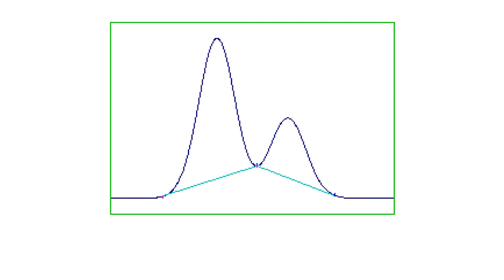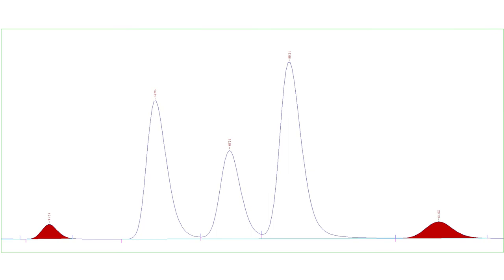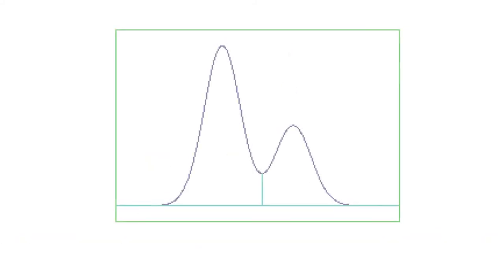To prevent this, peaks that are close to one another, relative to their own width, are assumed to overlap and are grouped together into clusters. Isolated peaks each have their own cluster. If there are several peaks in a cluster, then the baseline will be drawn under the entire cluster, and drop lines will be drawn from the valleys to the baseline, as shown in the following figure.